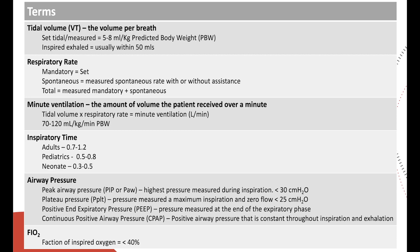When it comes to respiratory rate, there are several different types. There's the mandatory rate, which is a set rate — let's say 10. There's the spontaneous rate, which measures how many times the patient actually took a spontaneous breath with or without a assist from the ventilator. And then the total respiratory rate, often the biggest number on most ventilator screens, is mandatory plus spontaneous. So if you see a total rate of 20 and the mandatory is set at 10, the patient is breathing spontaneously 10 additional times.